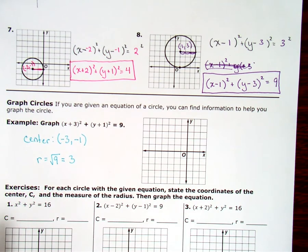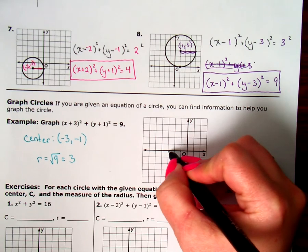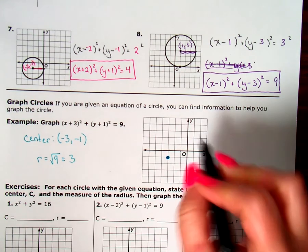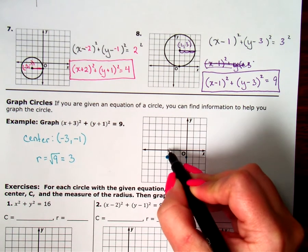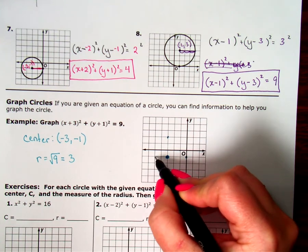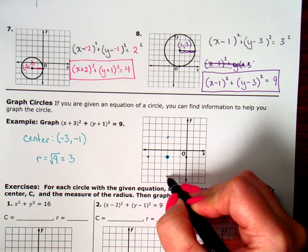And it says, let's see if we can graph this. My center is at negative 3, negative 1. 1, 2, 3, 1. There's my center. And my radius is 3. So, 1, 2, 3 to the right. Or I could go 1, 2, 3 up. Or I could go 1, 2, 3 to the left. Or I could go 1, 2, 3 down.